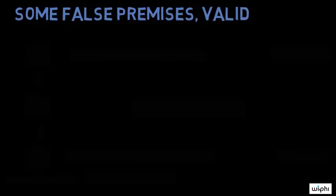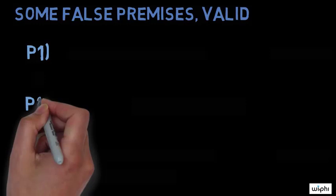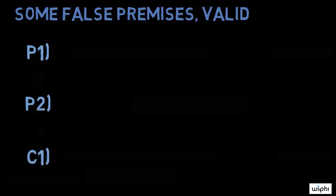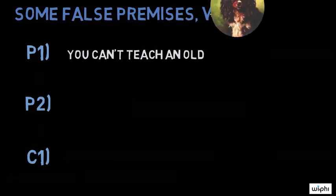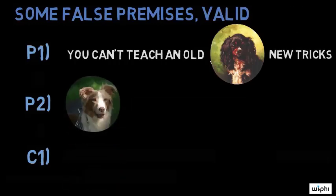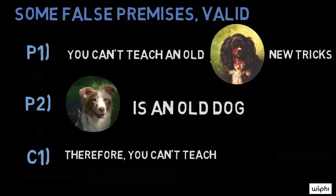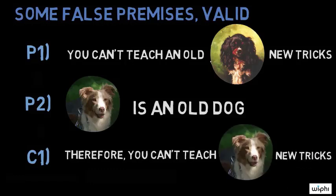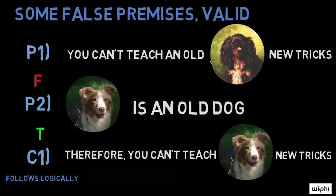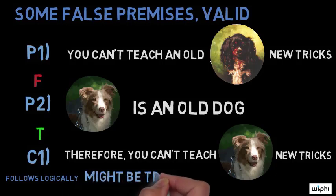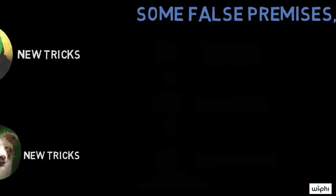We are now going to look at an argument with at least one false premise that is valid. Premise one: you can't teach an old dog new tricks. Premise two: Split is an old dog. Conclusion: therefore, you can't teach Split new tricks. Here, the first premise is false, but the reasoning is valid because the conclusion follows logically from the premises. Notice too that just as in the last example, the conclusion of this argument may happen to be true, although the argument does not establish that it is.